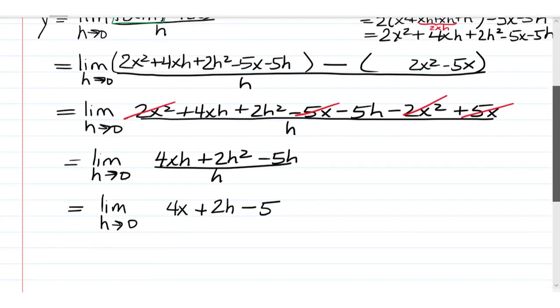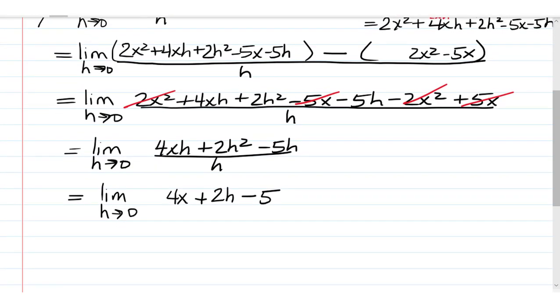So, we get 4x plus 2h squared divided by h is just 2h minus 5h divided by h is just 5. And no longer do we have the problem that if we plug in 0 for h, we're going to get undefined. So, now we can just plug in. Notice at this step I stopped writing the limit because I'm taking the limit. So, I don't need to write that anymore. So, we get 4x minus 5. This is our y prime. This is our derivative.